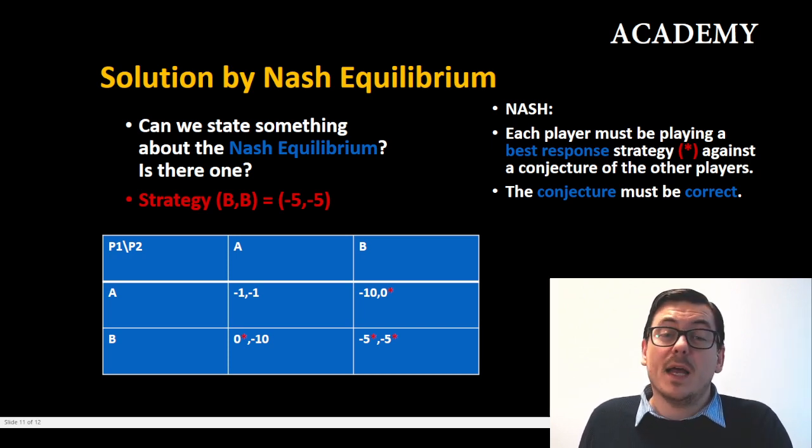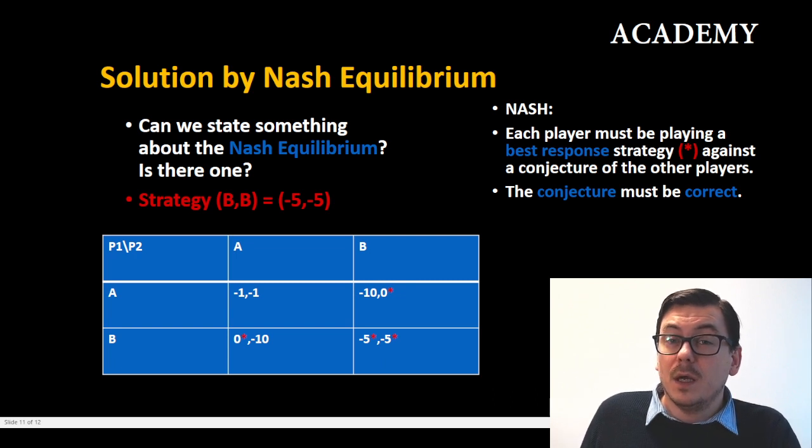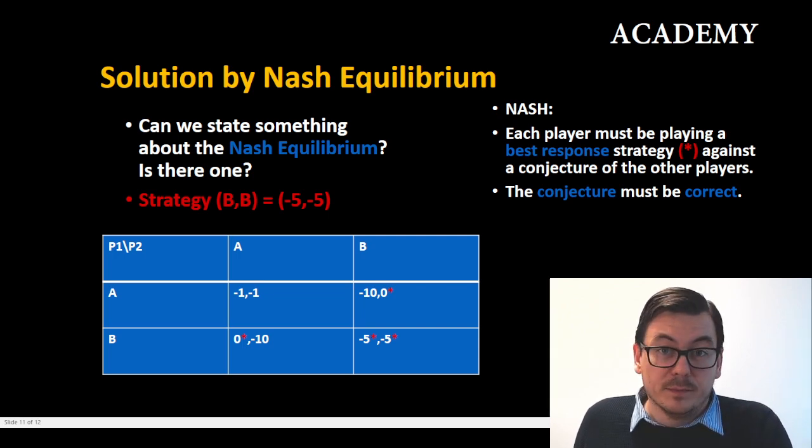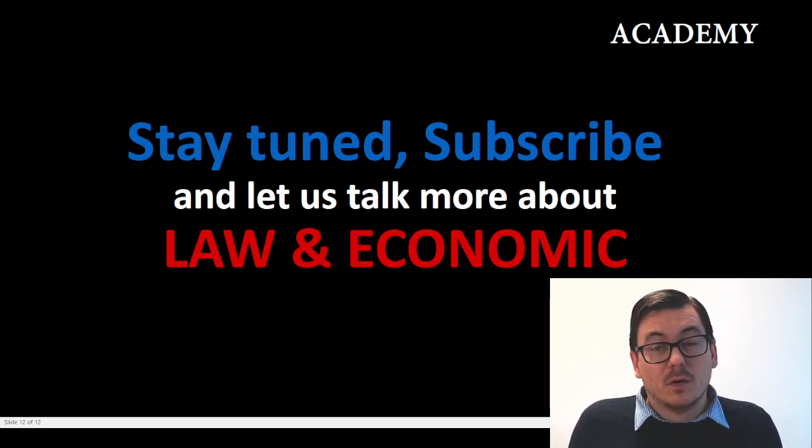Hence we have now solved a two by two matrix in strategic form with symmetric data via looking at the Nash equilibrium. So this was just a short video on Nash equilibrium solving strategic game forms. Stay tuned, subscribe, and let's talk much more about law and economics.